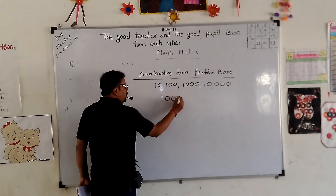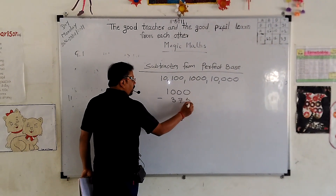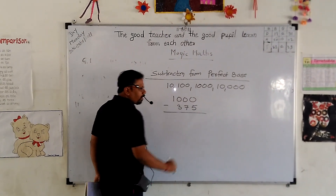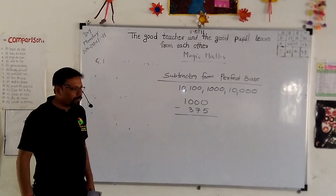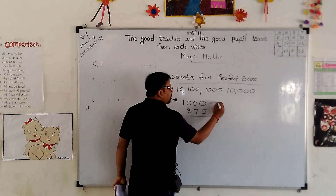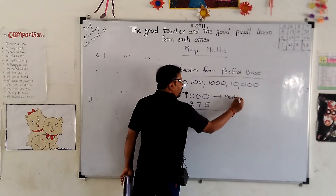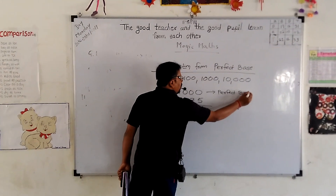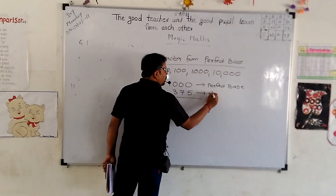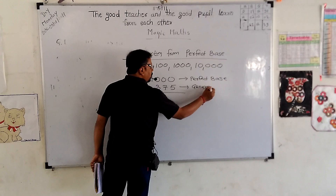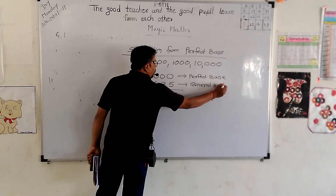Suppose one thousand minus three hundred and seventy-five. Three hundred and seventy-five is the general number, and one thousand is the perfect base.